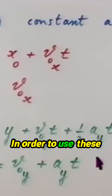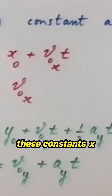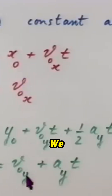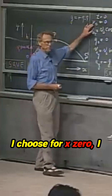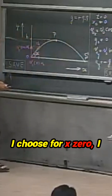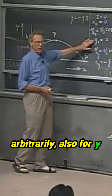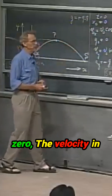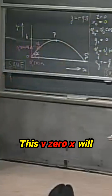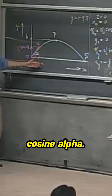In order to use these equations, we need all these constants: x zero, V zero x, and V zero y. We have seen those last time. I choose x zero to be zero arbitrarily, and also y zero. The velocity in the x-direction will never change — V zero x will always remain V zero cosine alpha.